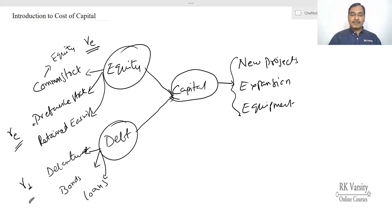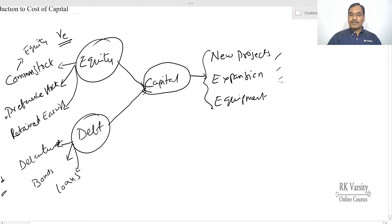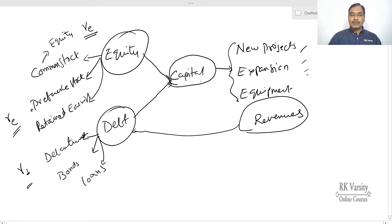In this sense, the company needs to generate revenues by its new projects or by expansion of these projects. They need to generate revenues, and through these revenues, they have to pay the cost. That means they have to meet the expectations of the investors.